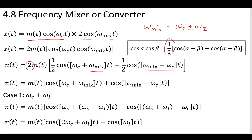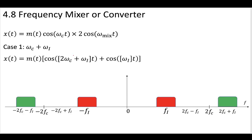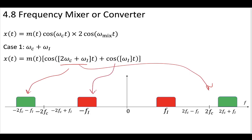Now let's look at two cases of ω_mix. In case one, ω_mix = ω_c + ω_i. When we apply this through the mixer and use our trig identities, we see that the message is modulated by a sum of two cosine waves: one at 2ω_c + ω_i (a high-frequency term), and one at ω_i, our intermediate frequency.